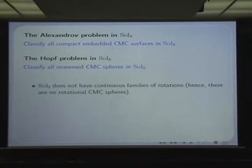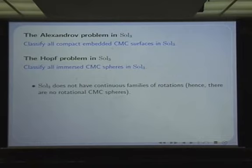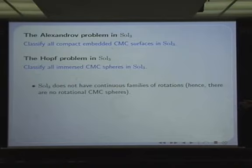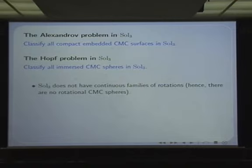It turns out there are many difficulties. The first is that in Sol₃ you don't have continuous families of rotations. The spaces we started with have a four-dimensional isometry group, and Sol₃ only has a three-dimensional isometry group. The three isometries of Sol₃ are like translations, so we are losing rotations. We don't have a one-parameter family of isometries of the space whose orbits are compact. If we try to classify CMC surfaces invariant by these continuous families of isometries, none of them will have compact orbits. So it is absolutely impossible to have rotational constant mean curvature spheres.